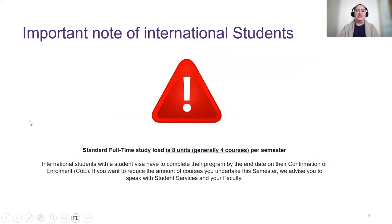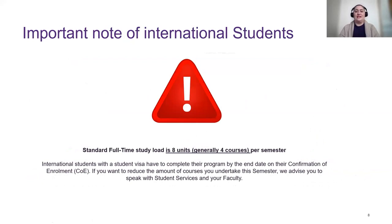For international students, a full-time study load is eight units — generally four courses — per semester. International students with a student visa must complete their program by the end date on their Confirmation of Enrolment (COE). If you want to reduce your course load, you must speak with student services and your faculty first, as it can impact your visa.